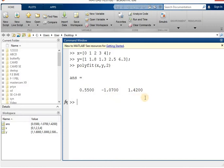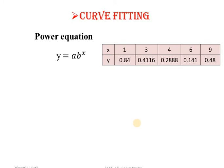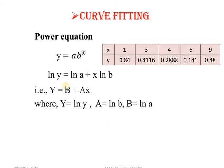Now let's see the power equation of the form y = a·b^x. We need to convert this into a straight line equation by applying the natural log on both sides. After comparing with the straight line equation y = Ax + B, we can write: capital Y = capital B + capital A·x, where capital Y is ln(y), capital B is ln(a), and capital A is ln(b). To get small a and b we apply the antilog: a = e^B and b = e^A.